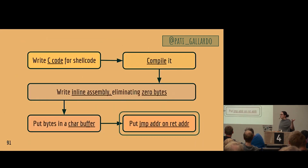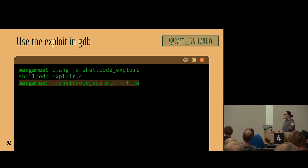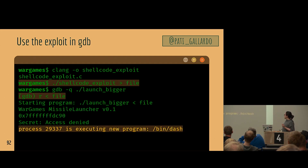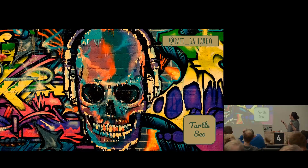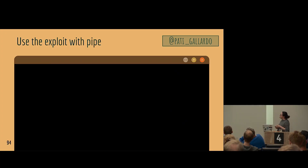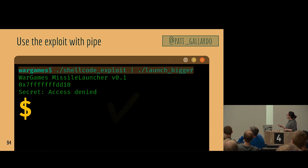Let's use it to actually exploit our program — that was the point. We write the exploit to a file, run our target in GDB, and feed it the file. Access denied — we don't care. It says 'executing new program' — as far as we got last time. Let's see if we get further. And yes — we got a shell! It's a win. Finally we look a little bit like baby hackers and we can do the thing. And without GDB, piping the exploit — it works!